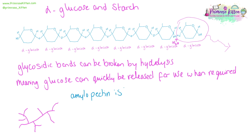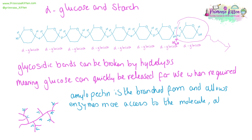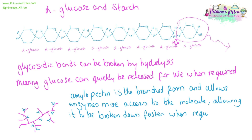Amylopectin is the heavily branched version of starch. This allows it to be broken down in multiple different locations at once, giving any enzyme that's breaking it down multiple access points. It means that more than one alpha-glucose monomer can be released at a time, so it can be broken down faster when energy is required.